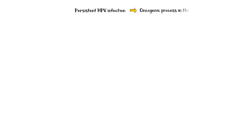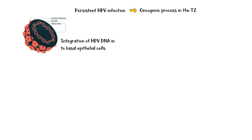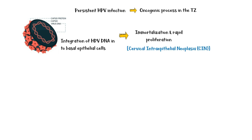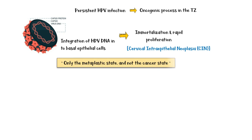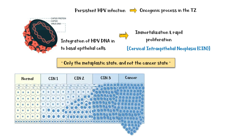When HPV infection persists in certain individuals, it triggers an oncogenic process in the region of the transformational zone. Integration of viral DNA into basal epithelial cells leads to immortalization and rapid cell proliferation. This process is called cervical intraepithelial neoplasia, and it is important to note that this is only the metaplastic state and not the cancerous state — it may or may not progress into cancer. The leftmost diagram shows normal cervical epithelium, the three middle diagrams show different stages of CIN where the basement membrane is intact, and therefore CIN is considered a pre-cancerous state rather than a cancer. The rightmost diagram shows cervical cancer, where the basement membrane is breached.